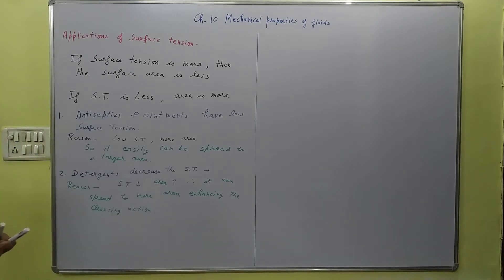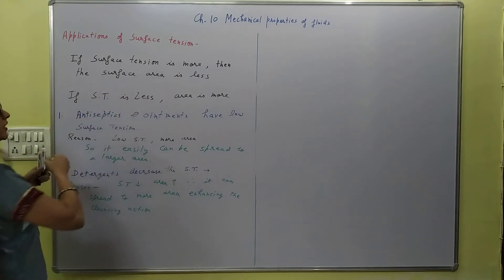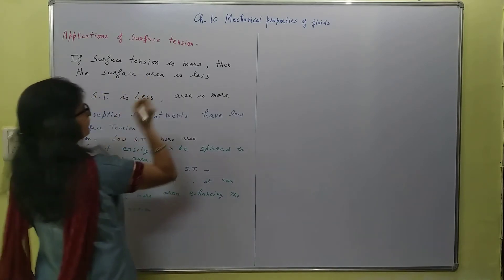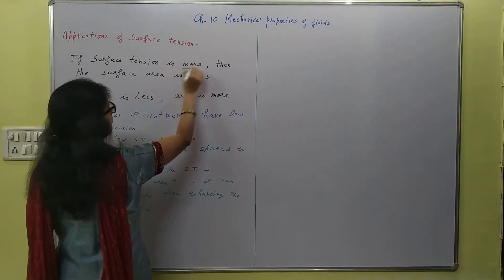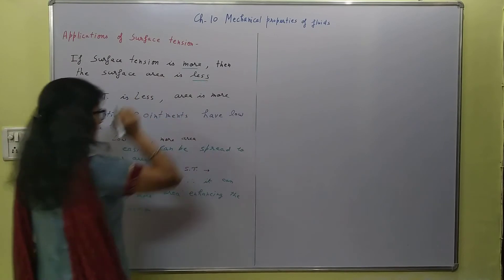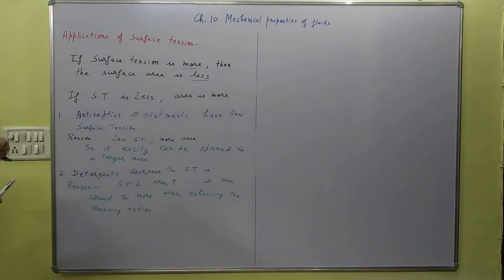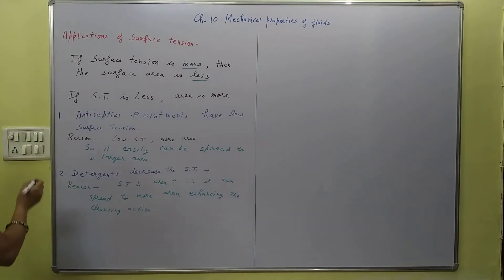So the most important thing: if surface tension is more, then the surface area is less. And if surface tension is less, then the surface area is more.